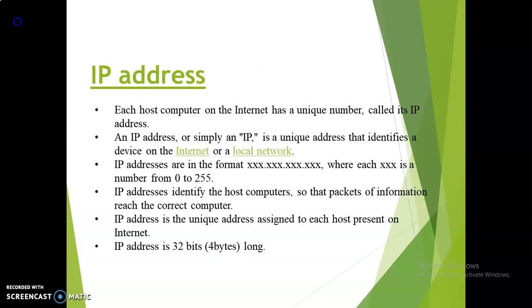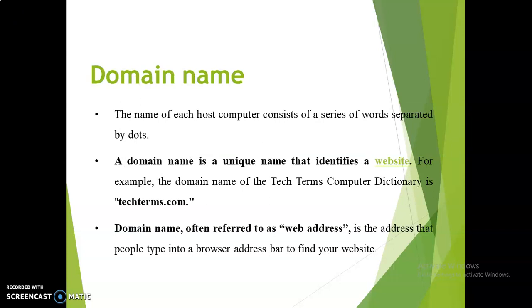In the internet, each computer is identified by one unique address, used for sharing information correctly from one system to another. That address is called an IP address. For example, 0.0.12.255 or 1.255.244 — the number ranges from 0 to 255, split into four parts separated by dots. There are two types: IPv4 address and IPv6 address.